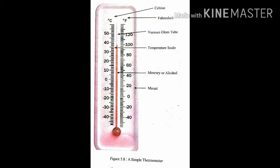The freezing point of mercury is minus 39 degree Celsius, while that of alcohol is minus 130 degree Celsius. Therefore, the variations in temperature from minus 30 degree Celsius to plus 55 degree Celsius can be easily observed with the help of these materials.